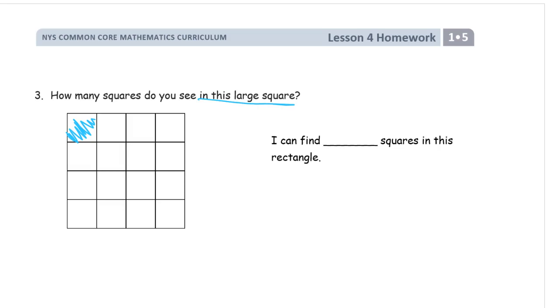You can see there's 1, 2, 3, 4, 5, 6, 7, 8, 9, 10, 11, 12, 13, 14, 15, 16 of those little guys. But there's also these two. Those are squares. And that's a square. And that's a square, too.